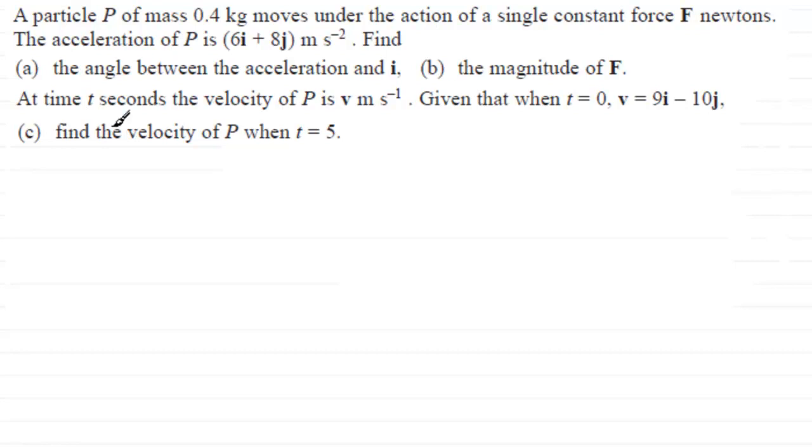And we're told that the acceleration of P is 6i plus 8j meters per second squared. We've got three parts to this question, A, B, and C. In the first part, we've got to find the angle between the acceleration and the vector i. First of all, I need to set up my unit vectors i and j. I'm going to take i as being horizontal and my j vector as being vertical.